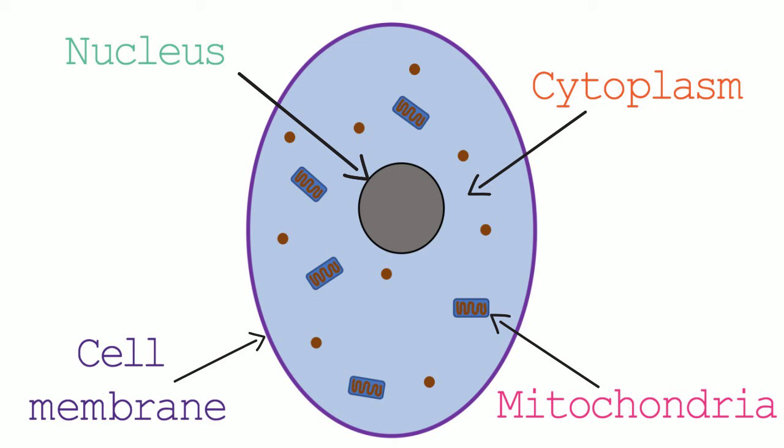Endoplasmic reticulum is another component that both animal cells and human cells have. In the cytoplasm there is a network of membranes and these membranes are known as endoplasmic reticulum.